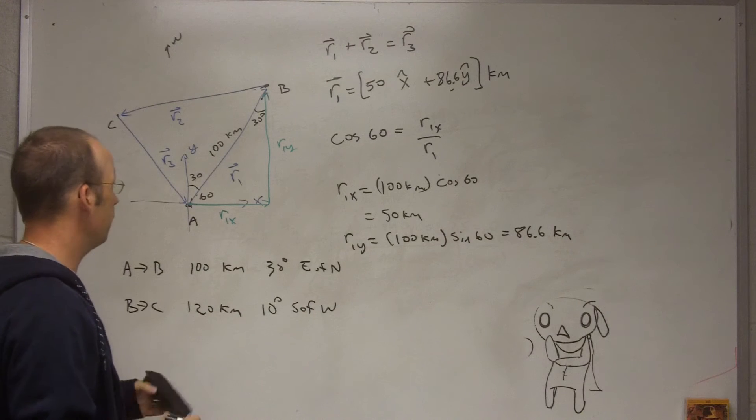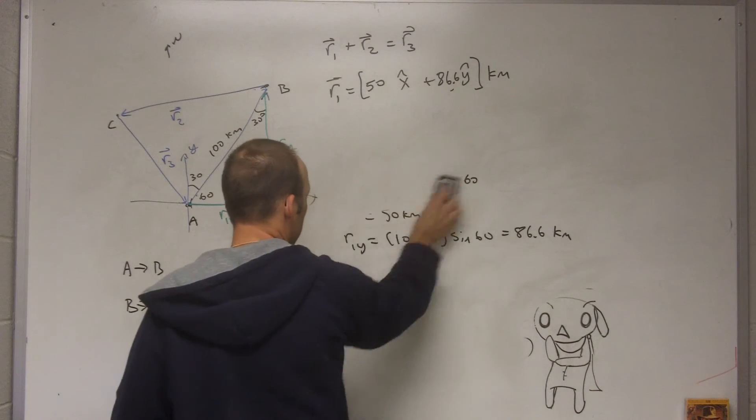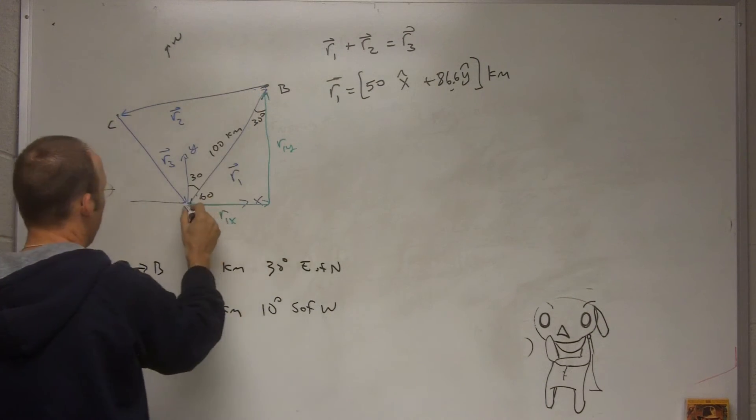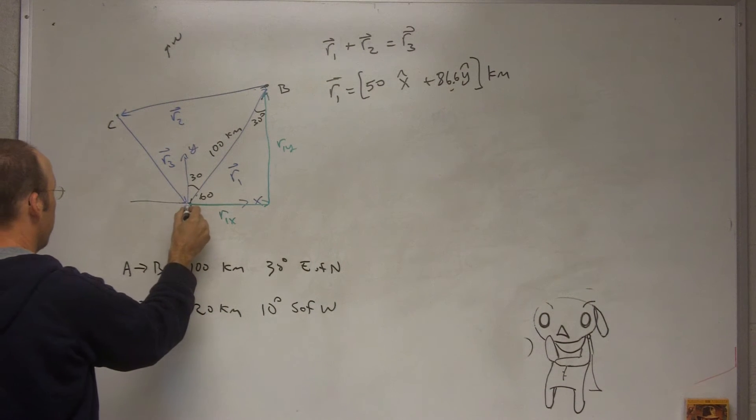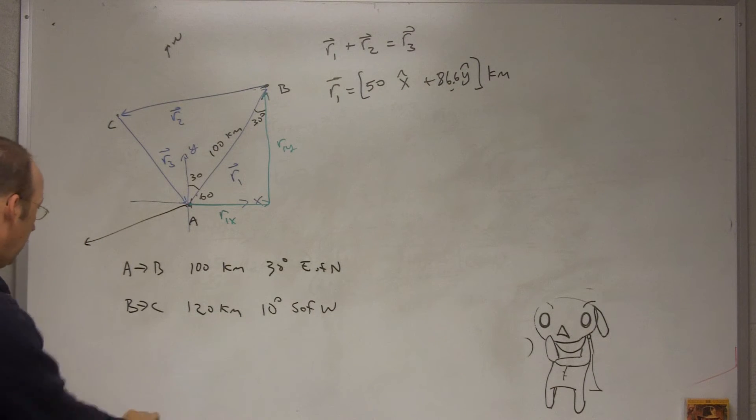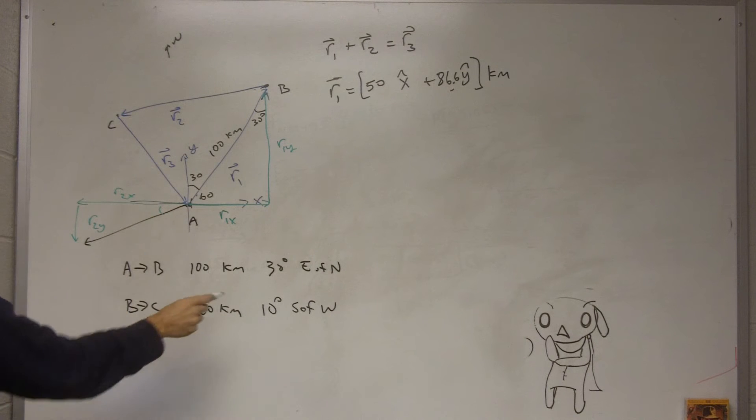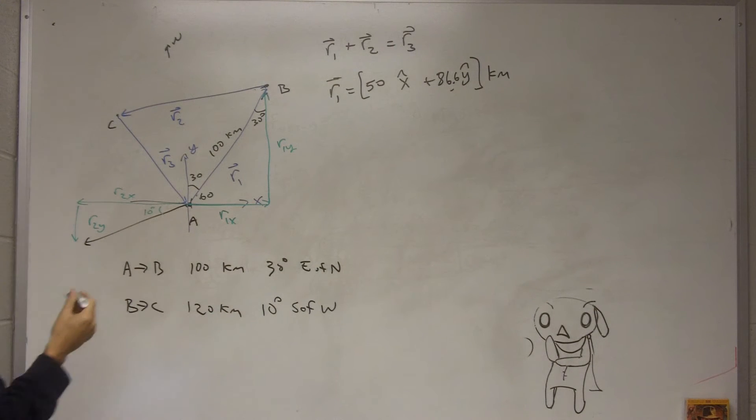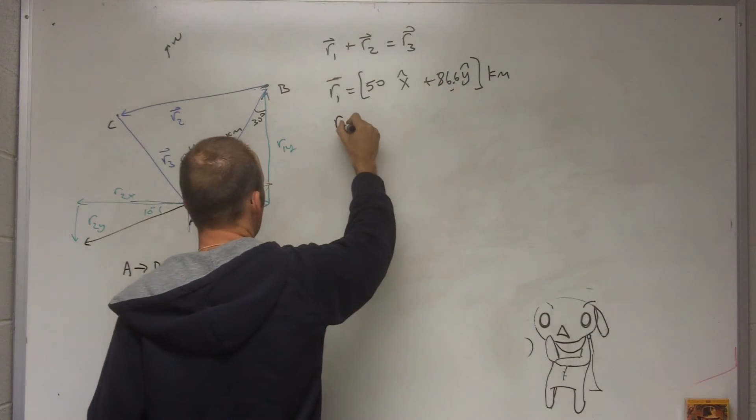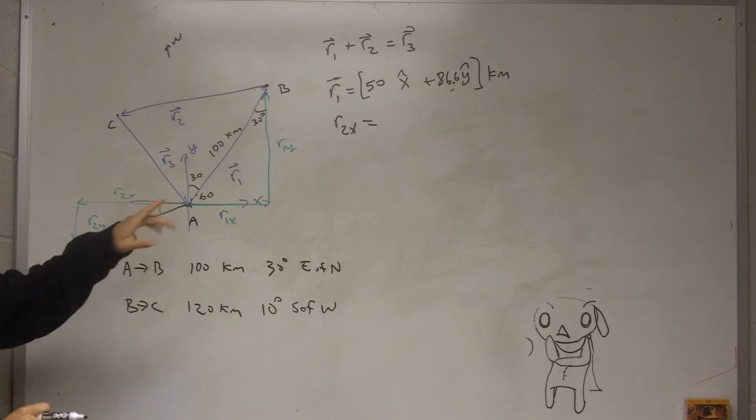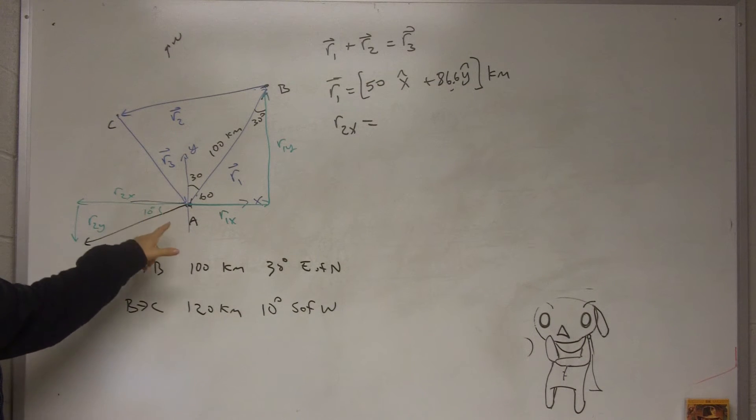Let's do r2. Now r2, you can move a vector as long as you don't change the length or the direction. So it's like this, and so here I have r2x, r2y, and that angle is 10 degrees. So r2x is just going to be, now here's one thing you have to be careful of.